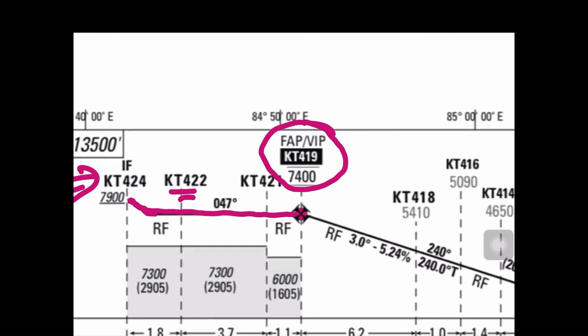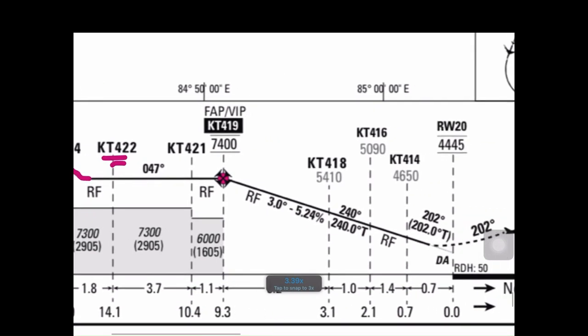At KT 419 — the FAP — you should be exactly at 7,400 feet, neither above nor below. You should be precisely at 7,400 feet when starting your descent on approach. From the Final Approach Fix at 7,400 feet, you begin your descent profile at 3.0 degrees or 5.24%, and you should not deviate above or below this descent rate.